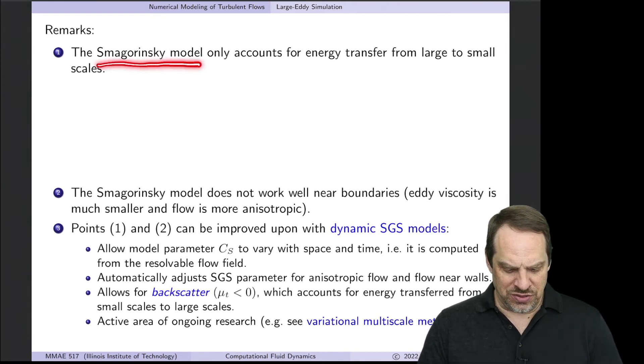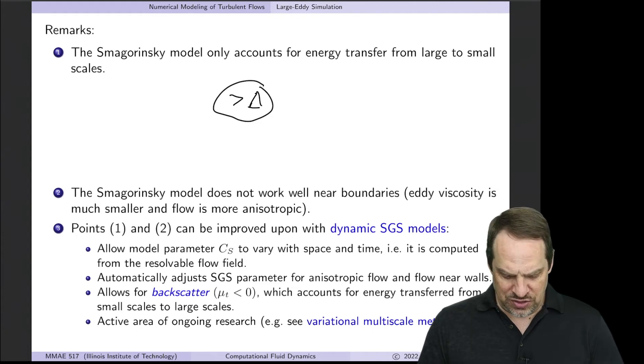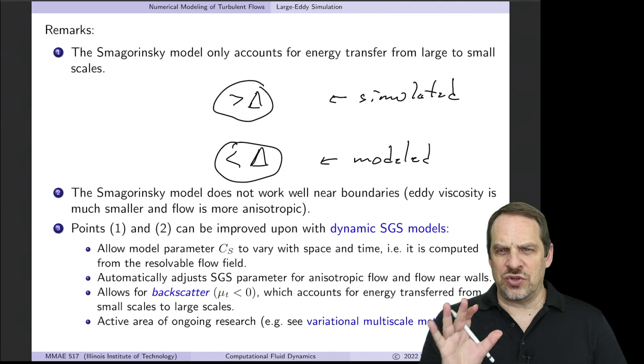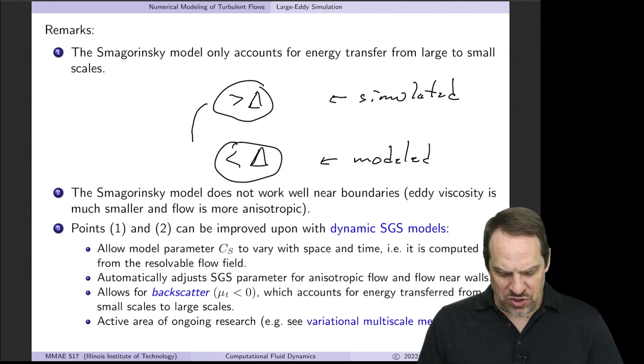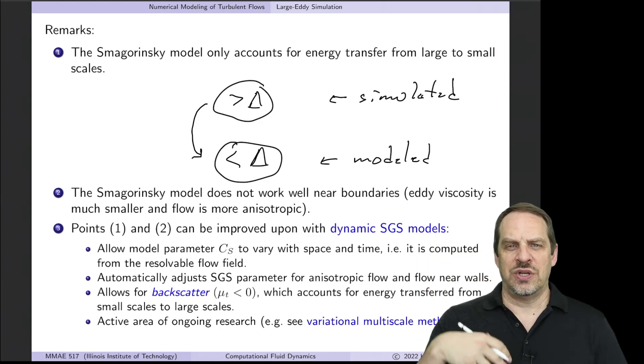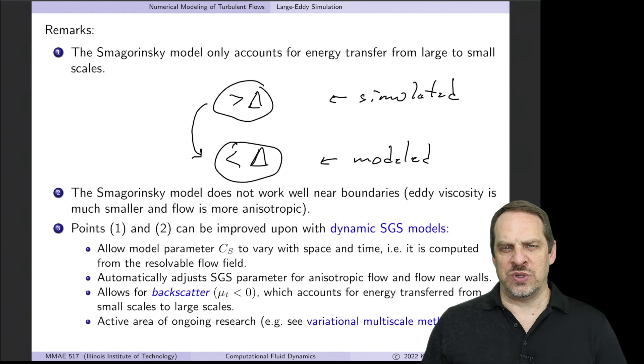Let me make some remarks about this overall approach and how we can improve on the Smagorinsky model. In the Smagorinsky model, we only account for energy transfer from large to small scales. Scales larger than delta are simulated, smaller scales are modeled. The Smagorinsky model allows energy from large scales to cascade down and influence small scales.